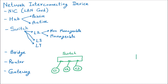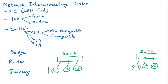Now there is one more switch we are having, again assuming three ports. So C4, C5, and C6 are connected to this second switch. We know that they are going to create a LAN. So this is LAN1 — Local Area Network 1 — and this is LAN2.